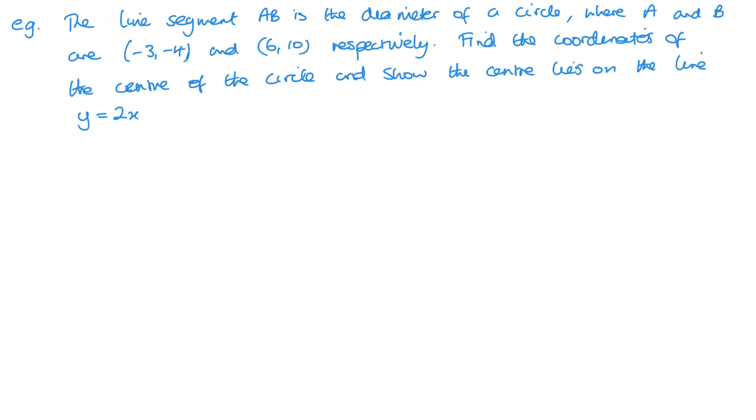So, here we have a line segment AB, which is the diameter of a circle. And so, I get something like this, just to show you visually. Now, I want to find the coordinates of the centre of the circle.